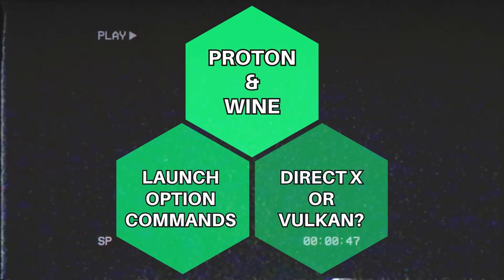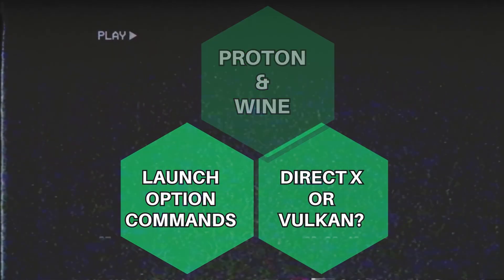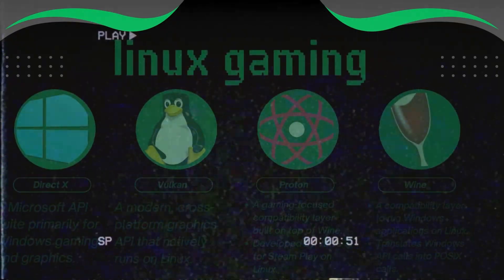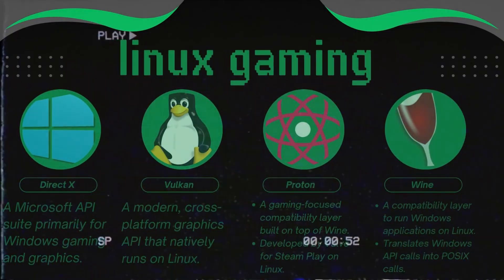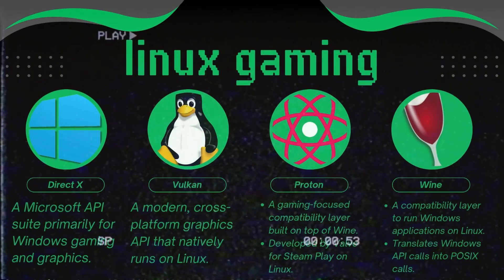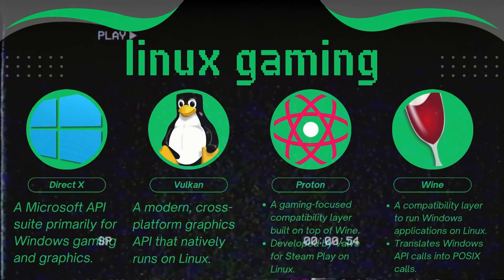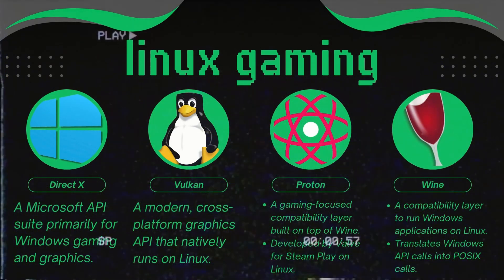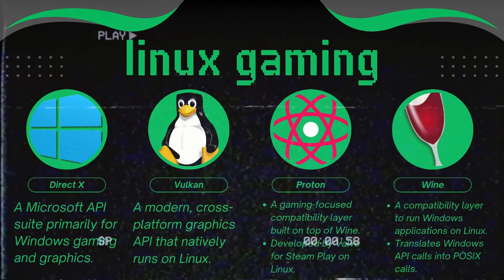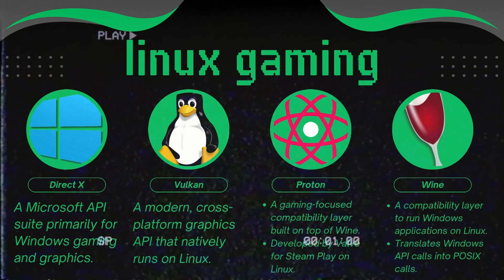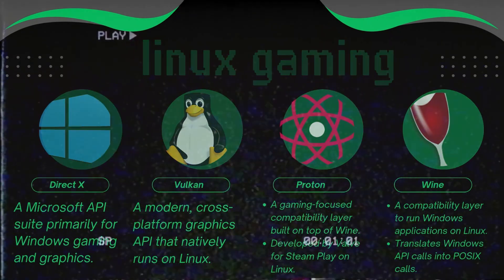Some users on ProtonDB may also recommend using DirectX or Vulkan. DirectX is Windows software designed to help games use hardware like graphics cards efficiently. This is the main reason why Linux uses those translation applications like Proton and Wine. Vulkan, similar to DirectX, works natively on Linux, so no translations are needed.